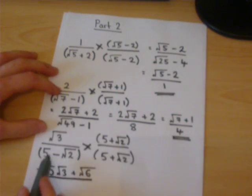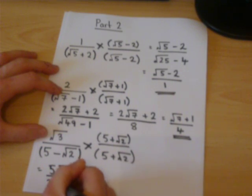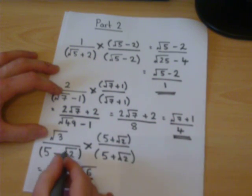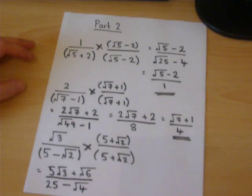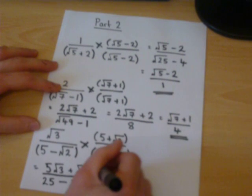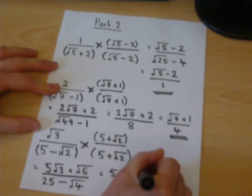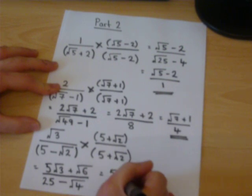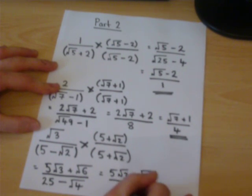Same trick. 5 times 5 is 25. We're minus now. Root 2 times root 2 is root of 4. So this equals 5 root 3 plus root of 6. Root of 4 is 2. 25 take away 2 is 23.